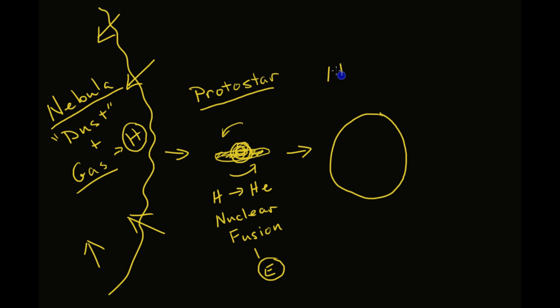And this stage would be called the main sequence of the star. It's the current stage that our own sun is in, the main sequence.